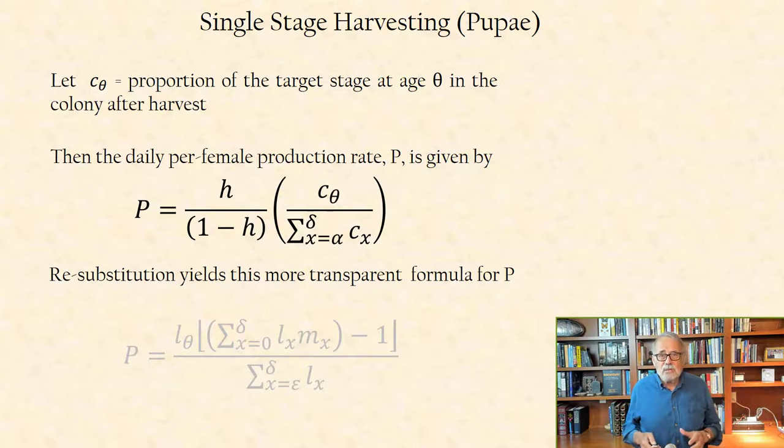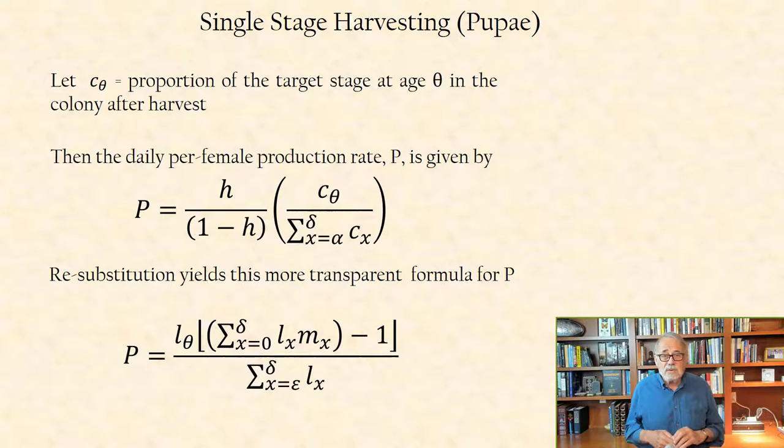P can also be computed from the equation given here with the more transparent components, including the net reproductive rate in the numerator and the per capita number of adult fly days from eclosion to discard age in the denominator.